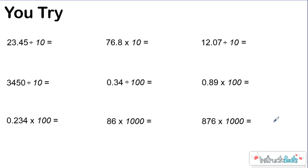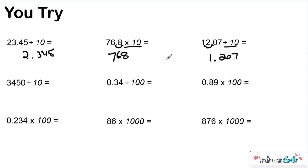Here's a you-try problem. Go ahead and pause the video, try out your new shortcut knowledge, and then push play to check your work. The first answer should be two hundred forty-five thousandths. Multiplying by ten means move one place value to the right, so 76.8 times ten gives 768. Dividing by ten means move one place value to the left, so the answer is one and two hundred seven thousandths. Dividing by ten when there's no decimal — the decimal is always next to the ones place — move it one spot left: three hundred forty-five and zero tenths, which you'd just write as three hundred forty-five since that zero isn't significant.